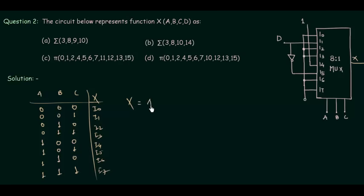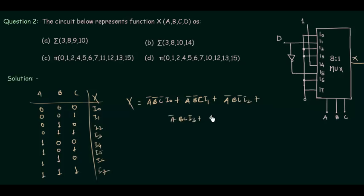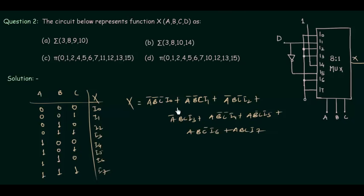x = a'b'c'·i0 + a'b'c·i1 + a'bc'·i2 + a'bc·i3 + ab'c'·i4 + ab'c·i5 + abc'·i6 + abc·i7. Now we substitute the input values from the question. i0=0, i1=d, i2=0, i3=0, i4=1, i5=d', i6=0, i7=0.